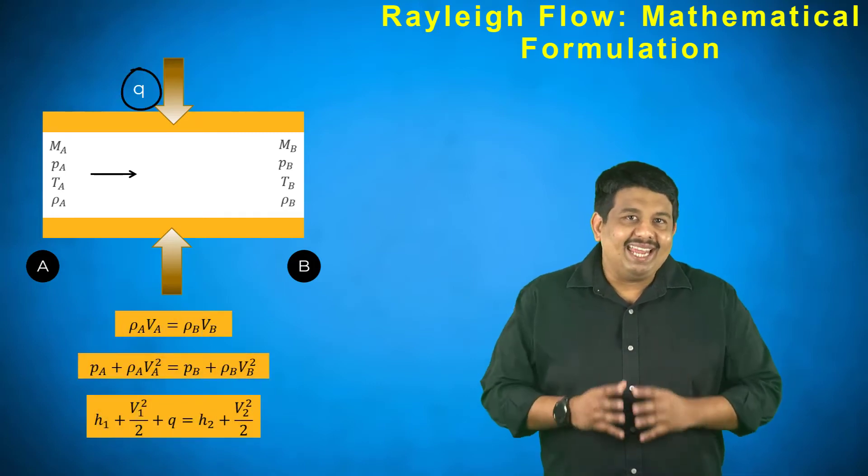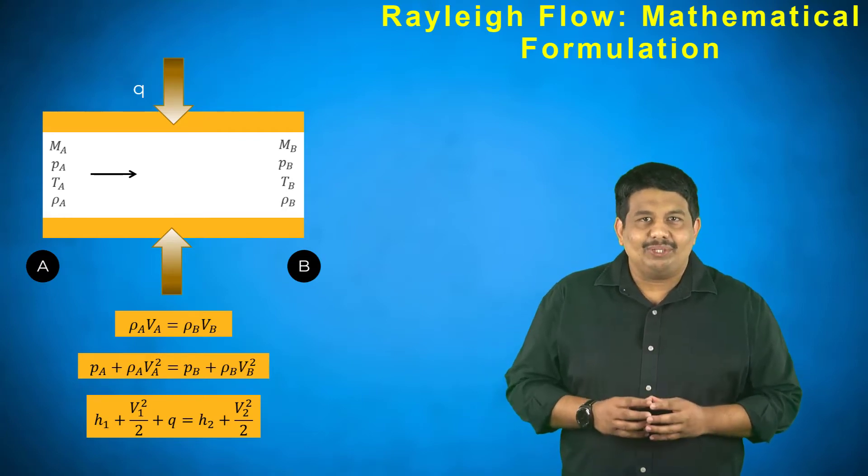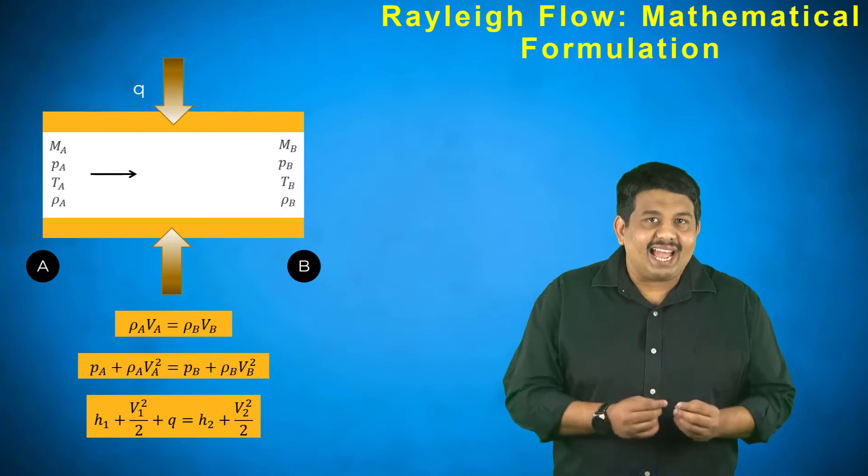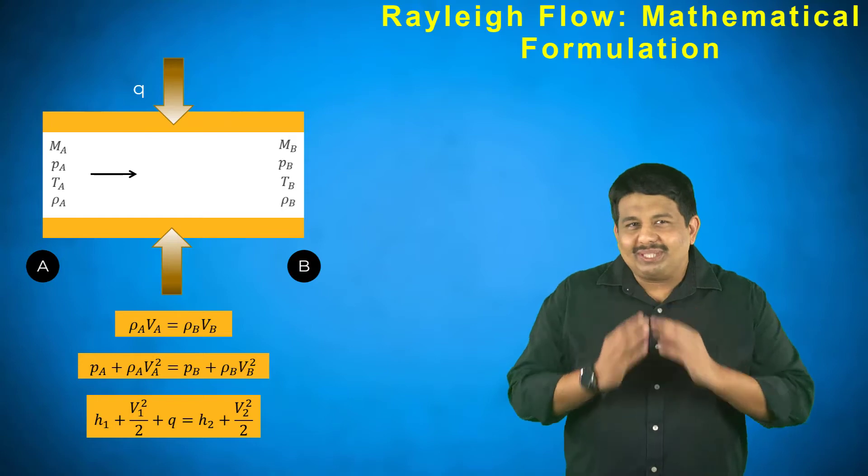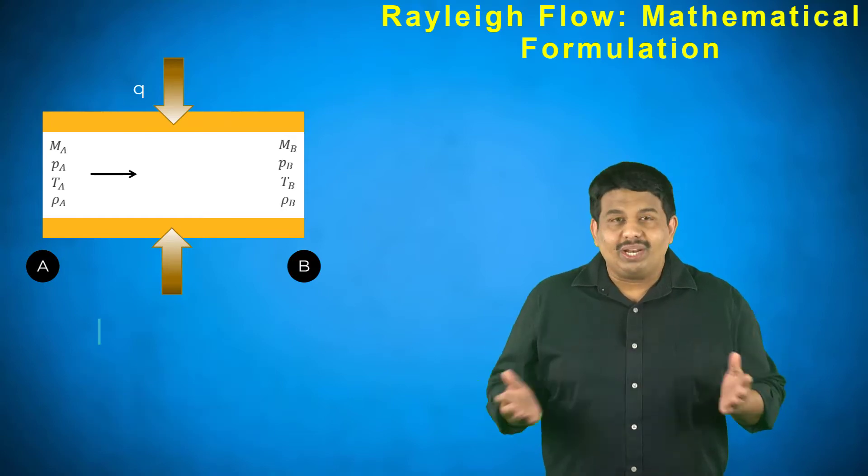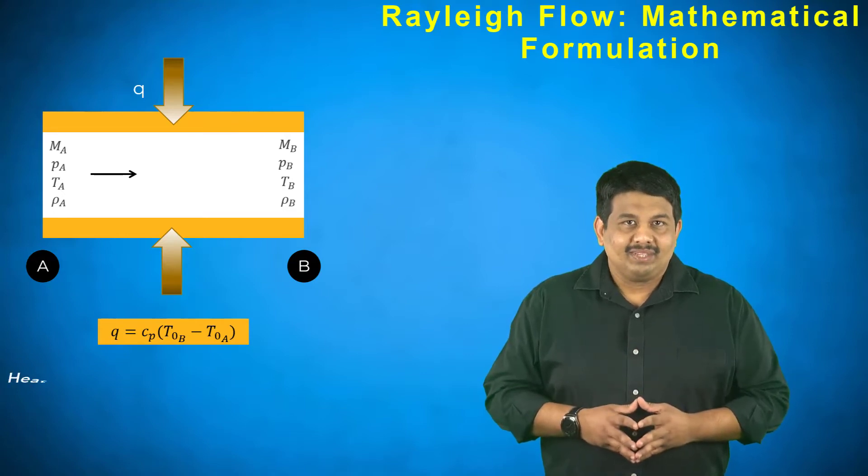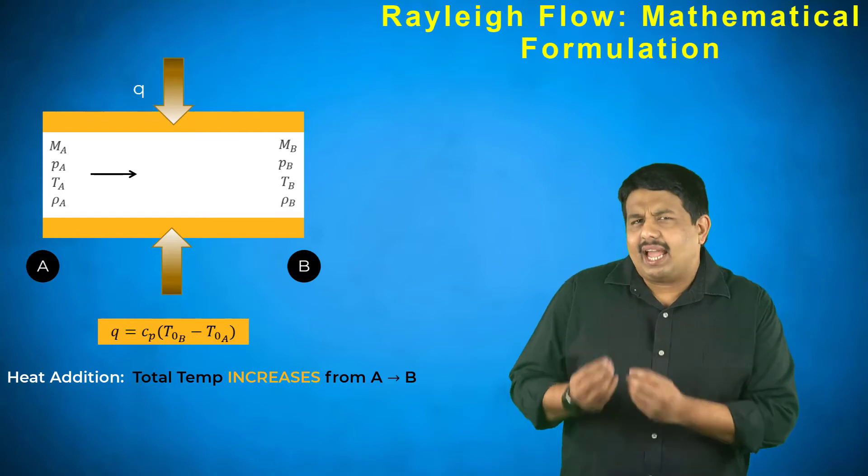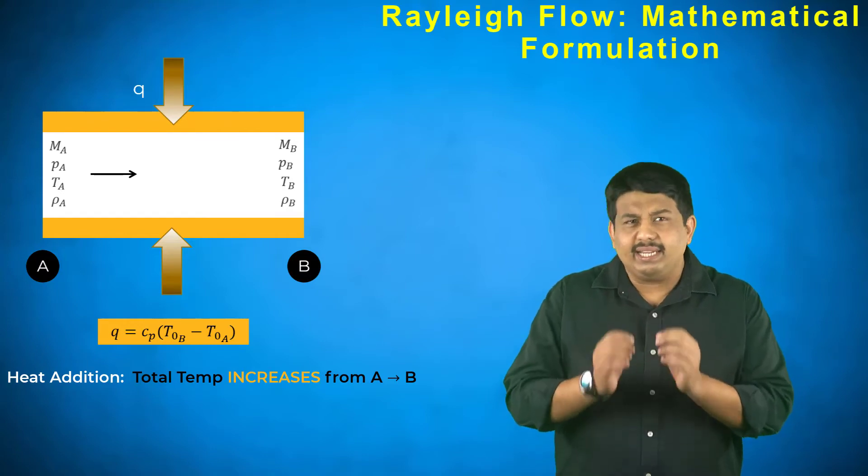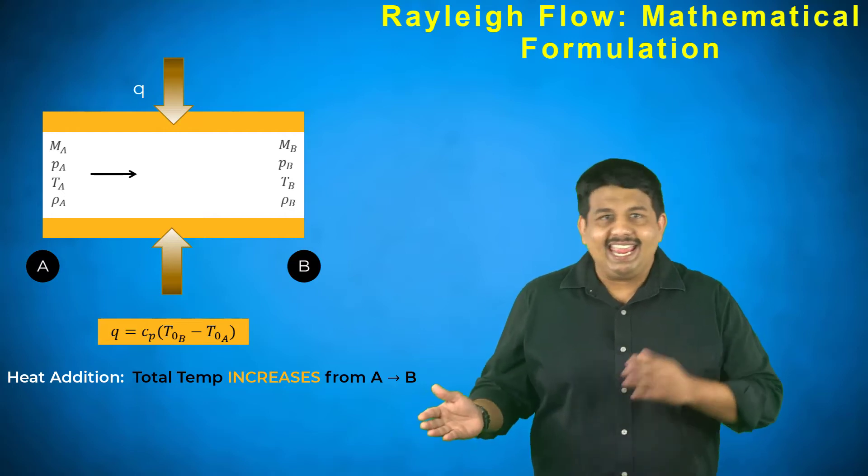Q is the heat added per unit mass. A closed-form analytical solution is obtained if the gas is considered calorically perfect. Using this relationship and the total temperature definition, we can rewrite Q as following. This implies that the effect of heat addition directly leads to an increase in total temperature of the gas between regions A and B.